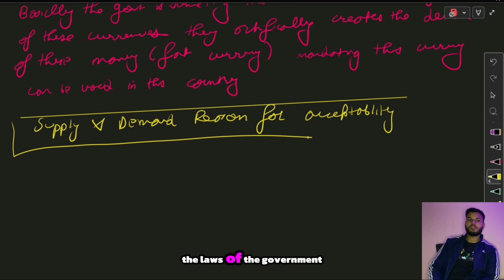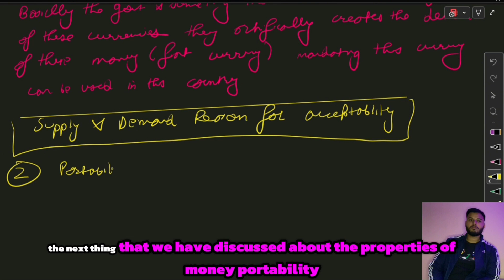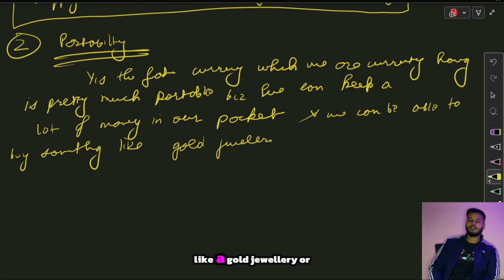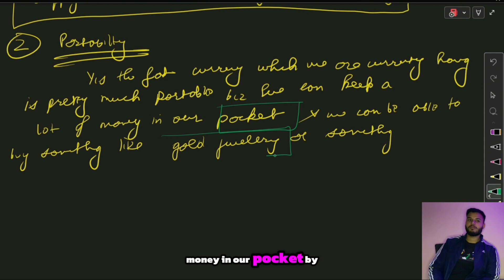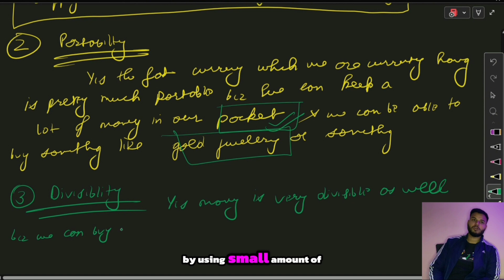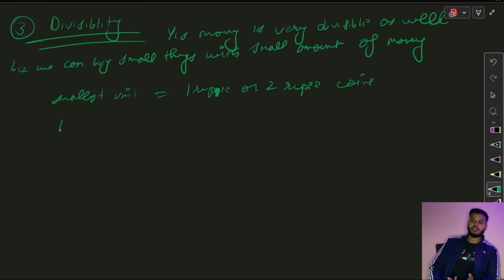The next property is portability. Fiat currency is pretty much portable because we can keep a lot of money in our pocket and go buy something like gold jewelry. Money is portable. Another property is divisibility — money is divisible because we can buy small things using small amounts. The smallest unit is a one rupee coin and the largest is a two thousand rupee note, so we can buy even a one rupee toffee.